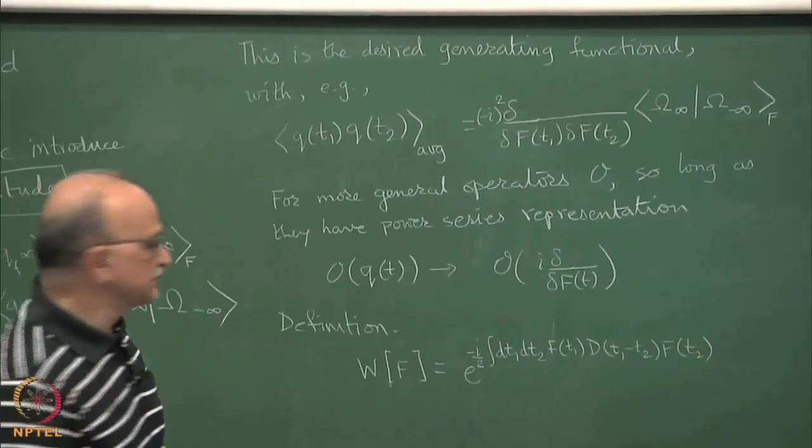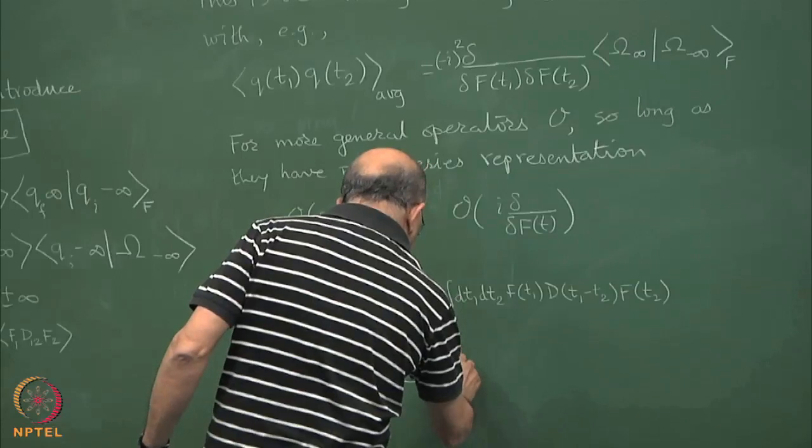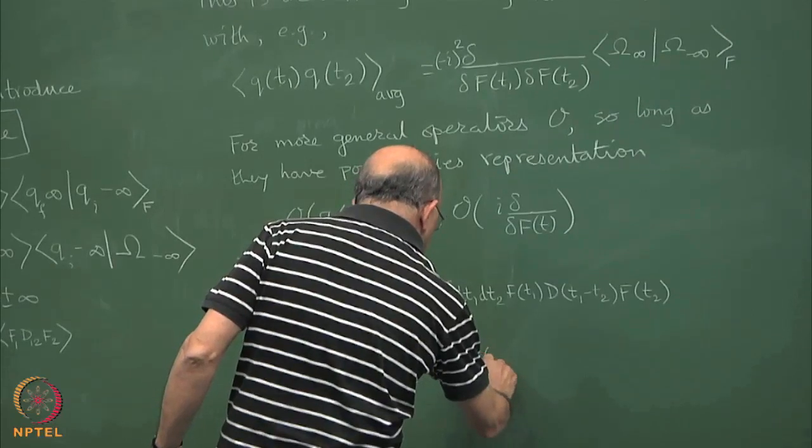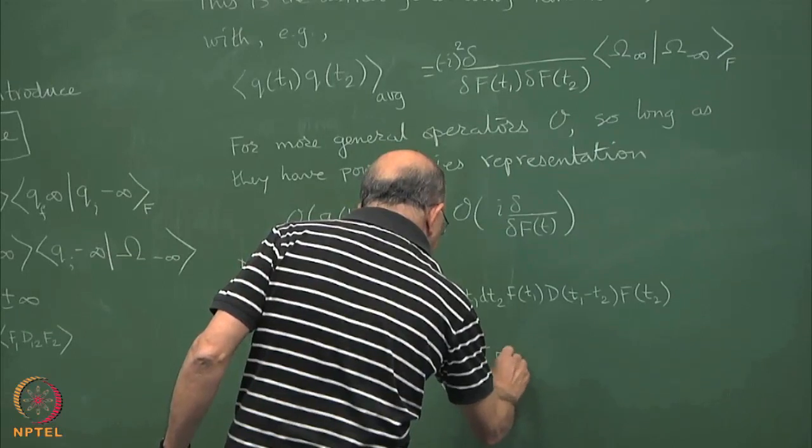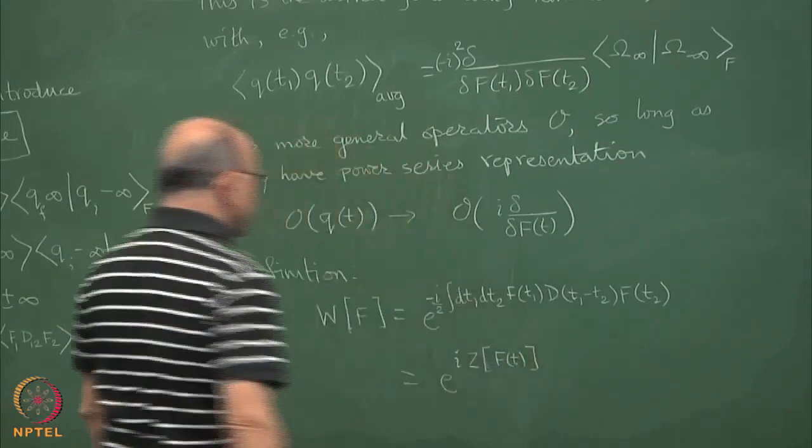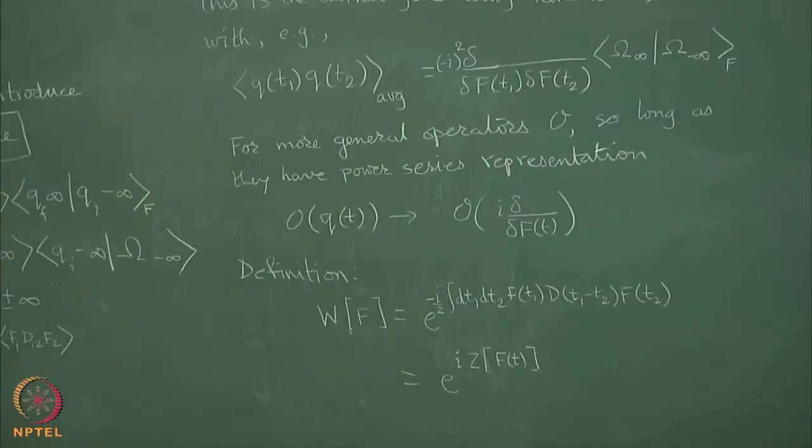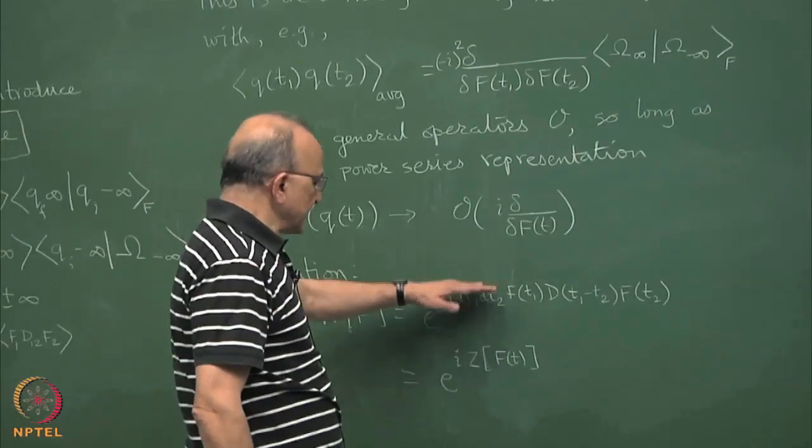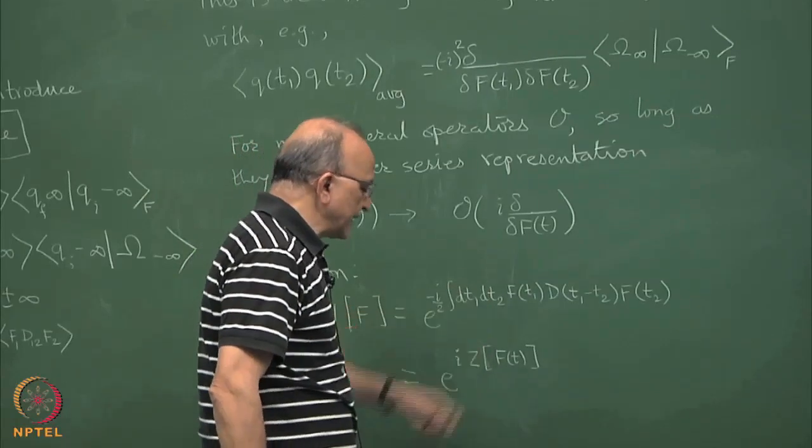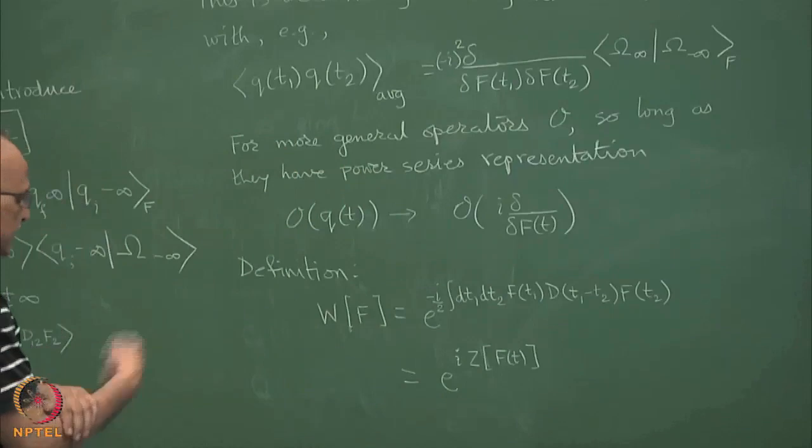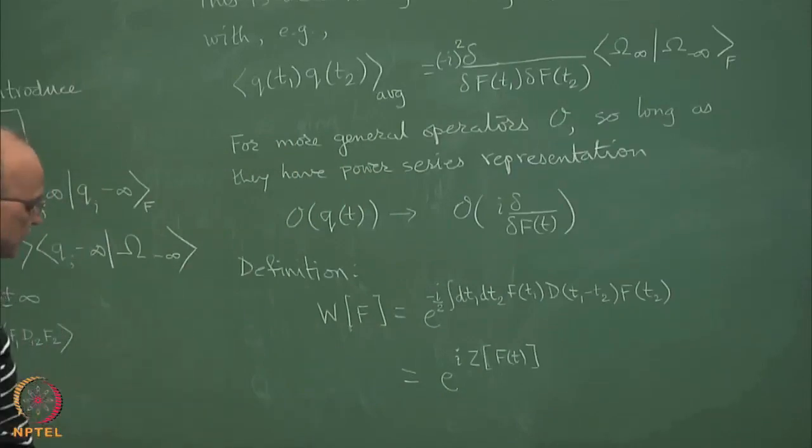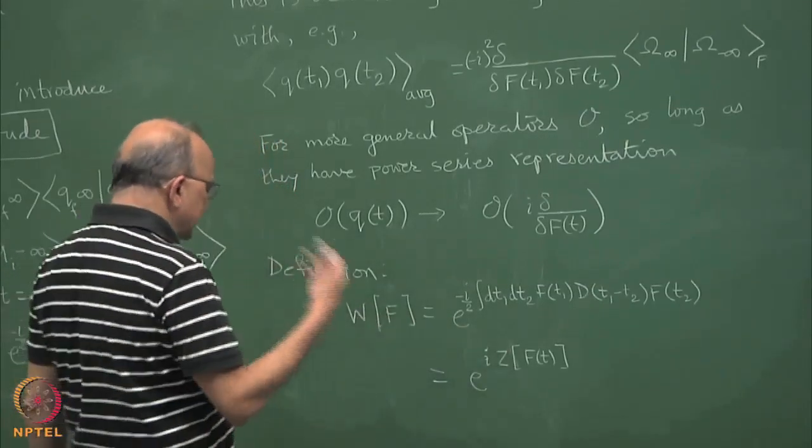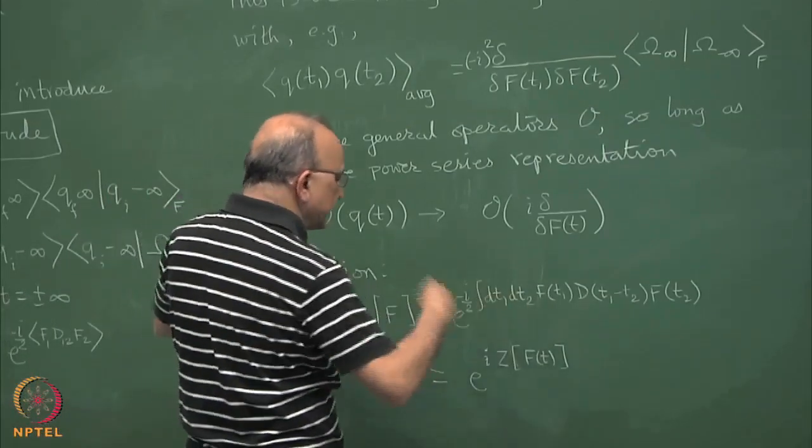What comes out is essentially the classical path, and so we think of this as the effective classical action. We define this to be equal to i times z(f). This z(f) is actually what we call the effective action, but in terms of the current instead of in terms of the variables. For the time being, just remember that this is how we write. We call w(f) to be this; in field theory it will make more sense.